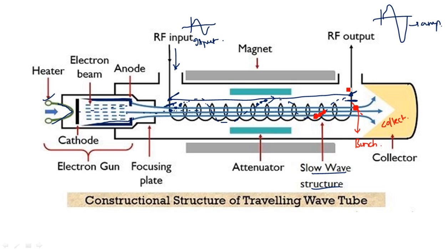The magnetic field affects the flow of the propagating signal from the electron gun towards the RF output. The last stage is the collector, which collects the unwanted electrons. At the end, the bunch is created and gives an amplified RF output. Focusing plates keep the signal traveling through the helical shape, and bunching of electrons at the end shifts the phase by pi over two. The magnet produces an axial magnetic field that prevents the spreading of the electron beam as it travels down the tube.